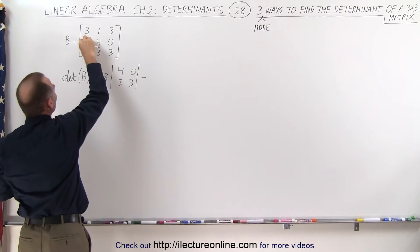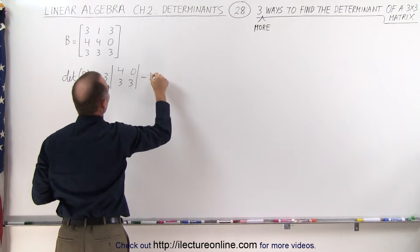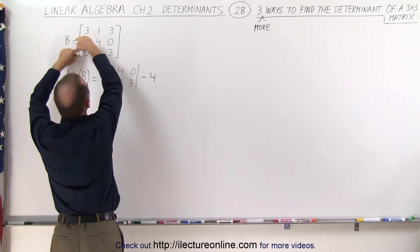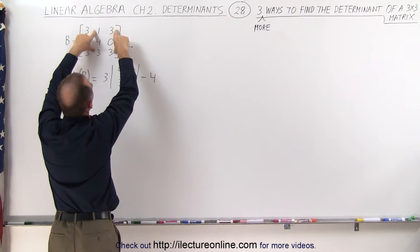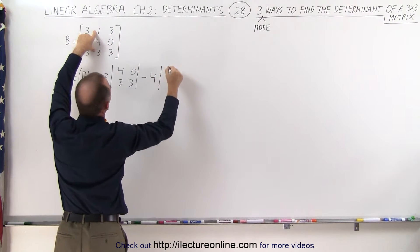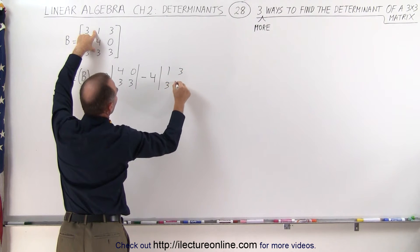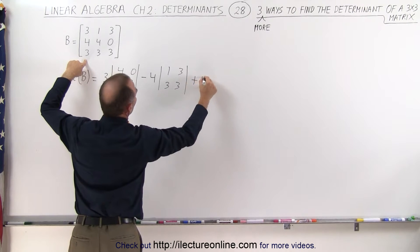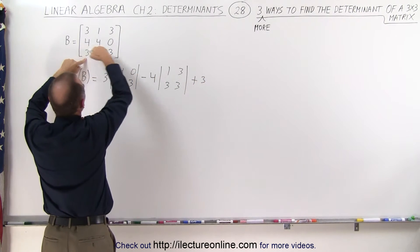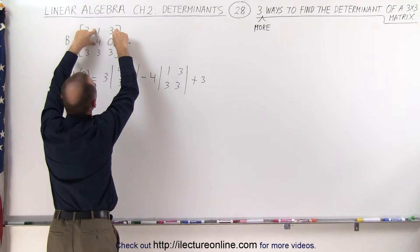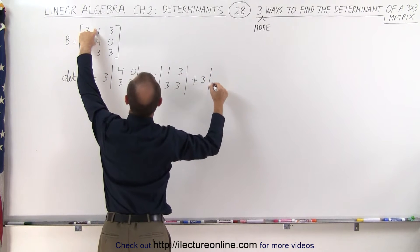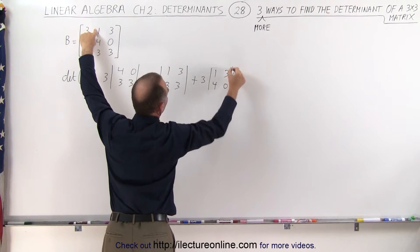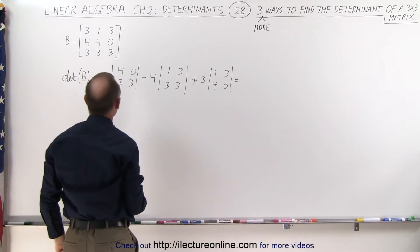Minus, because the signs alternate, we take this element right here which is 4 times, if we cross out this row and this column, we end up with those four elements which is 1, 3, 3, and 3. So we take the determinant of that. And then plus 3 times when we cross out this row and this column, we end up with those four elements. That would be the determinant 1, 4, 3, and 0. So let's go ahead and work that out and see what we get.